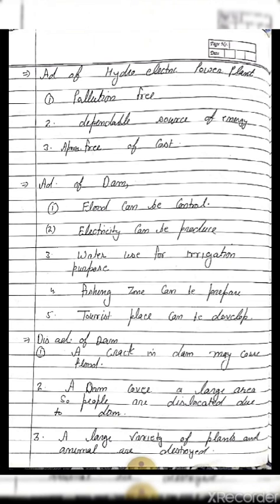Advantages of a hydroelectric power plant: it is pollution-free, no fossil fuels are used, and it is a dependable source of energy — approximately free of cost because it is a one-time investment. Advantages of a dam include: floods can be controlled, electricity can be produced, water can be used for irrigation, a fishing zone can be created near the dam, and it can be used as a tourist place for the government to earn revenue.